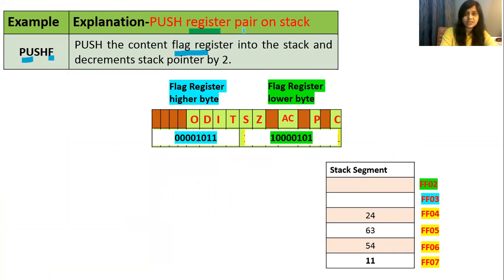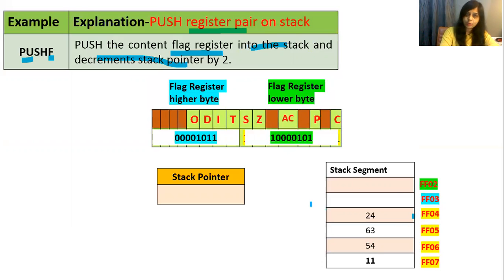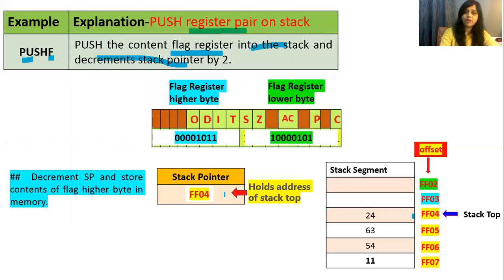Now this is the push flag register (PUSHF) operation. Here PUSH register pair means the flag register. It is a 16-bit flag register — this is the lower byte and this is the higher byte. The instruction says: push the contents of the flag register into the stack and decrement the stack pointer by 2. Stack is filled up to FF04, so the stack pointer holds FF04.